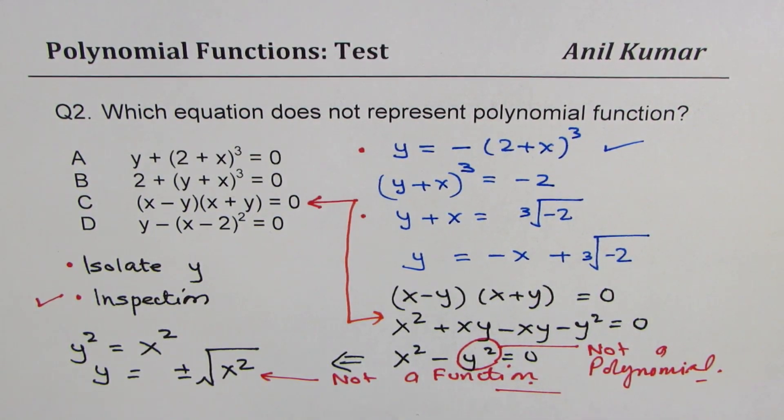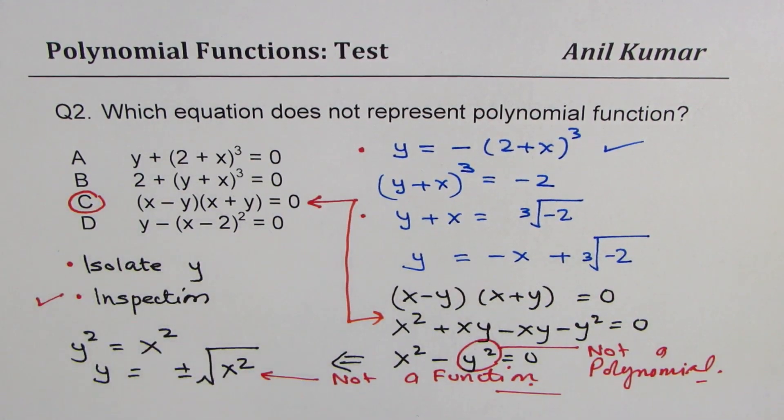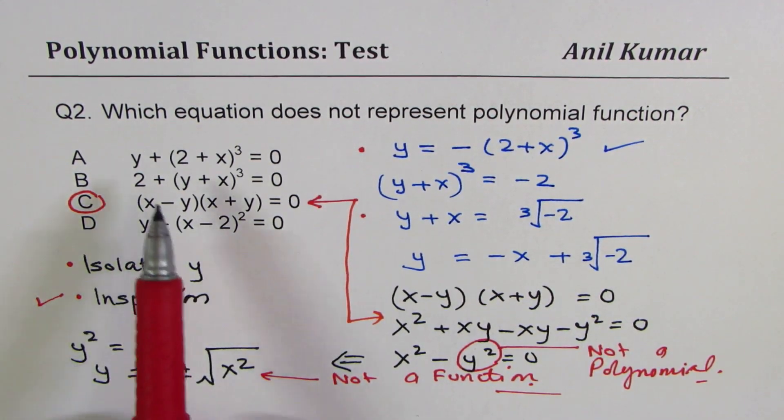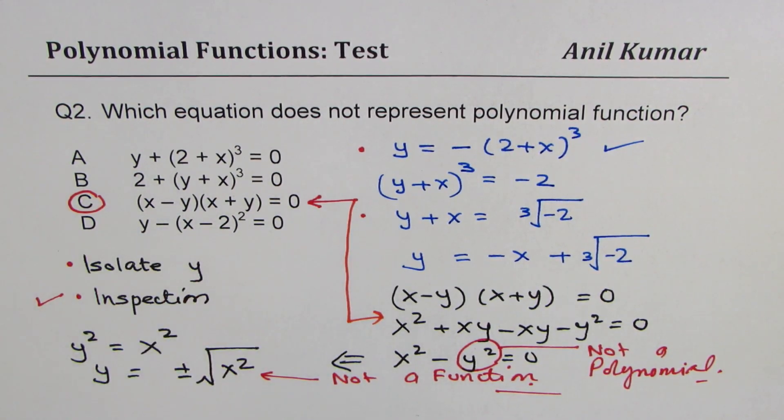So that gives you option C as the right option for which one of these equations does not represent a polynomial function.